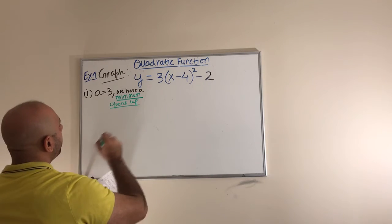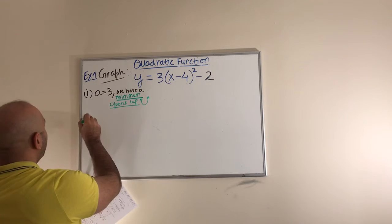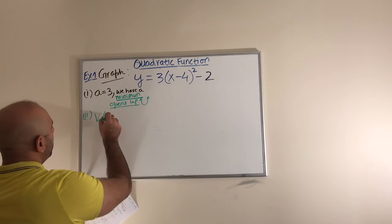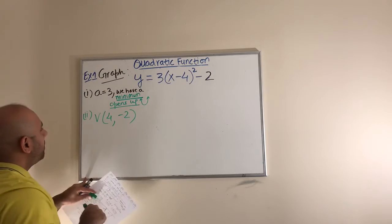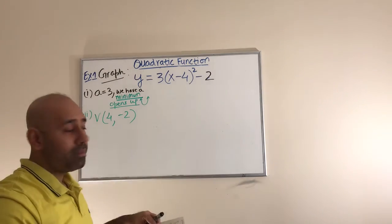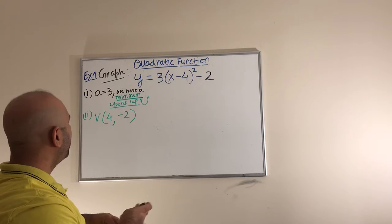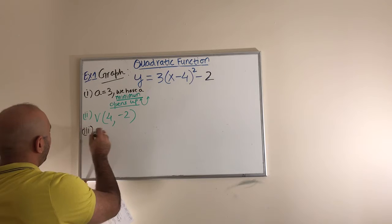That is a. Then number two, I have the coordinates for the vertex which are 4 and negative 2. You can see them here and they have been calculated in my previous video. Then I have the axis of symmetry which we already know in this case is, what is the axis of symmetry? It is x equals to 4.